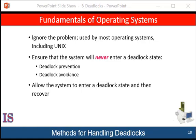Deadlock avoidance requires that the operating system be given additional information in advance concerning which resources a process will request and use during its lifetime. With this additional knowledge, the operating system can decide for each request whether the thread should wait. To decide whether the current request can be satisfied or must be delayed, the system must consider the resources currently available, the resources currently allocated to each process, and the future requests and releases of each process.